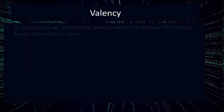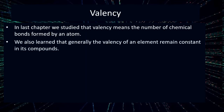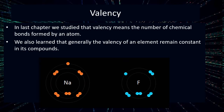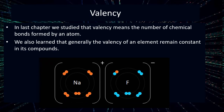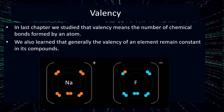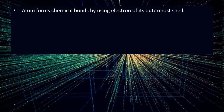In the last chapter we have seen that valency means the number of chemical bonds formed by an atom. We have also learnt that generally the valency of an element in its compound remains constant. In this GIF, you can see that sodium and fluorine atoms share one bond to form the compound sodium fluoride. The valency of sodium and fluorine is 1 because they share one bond. The concept regarding valency of an electrochemical bond gets clarified from the electronic configuration of an atom.